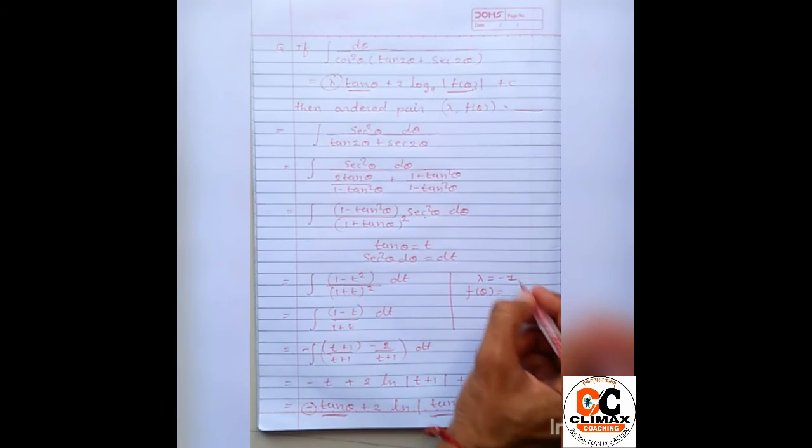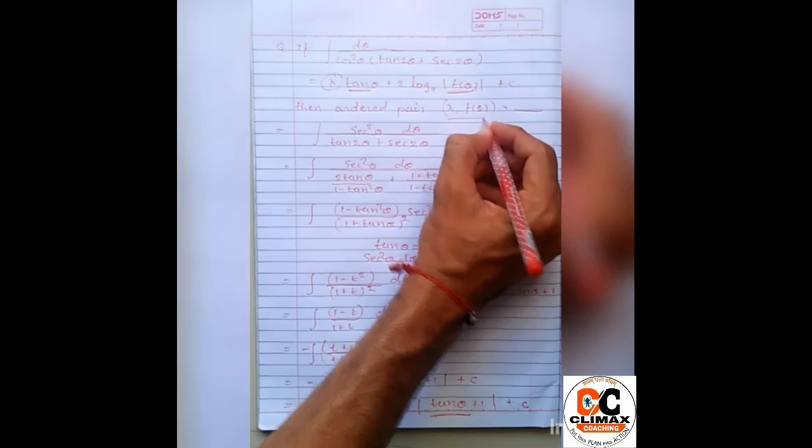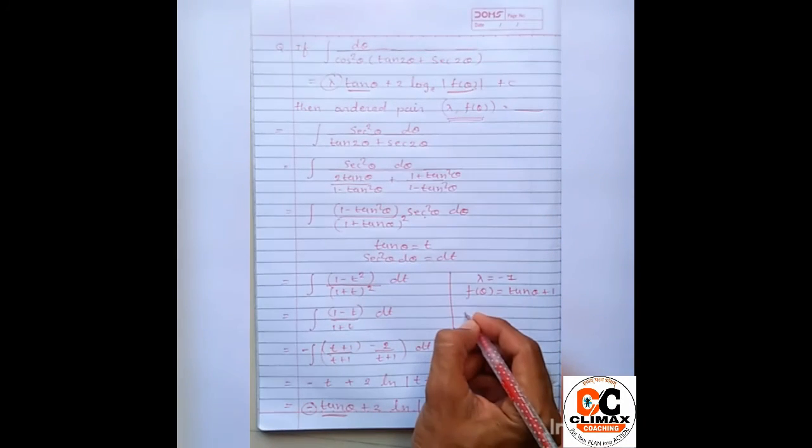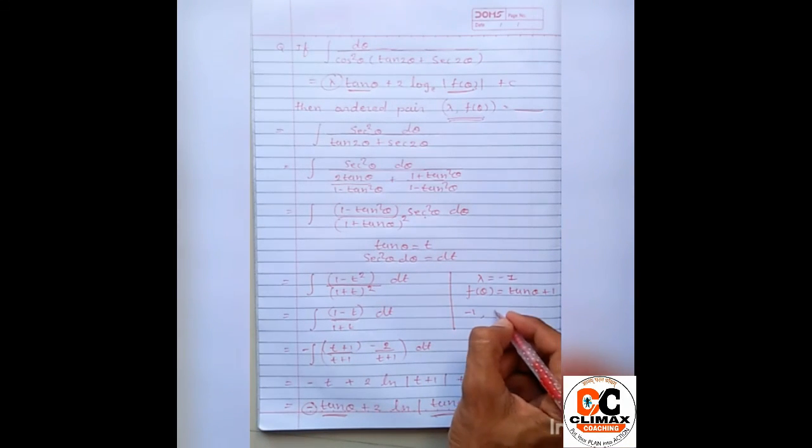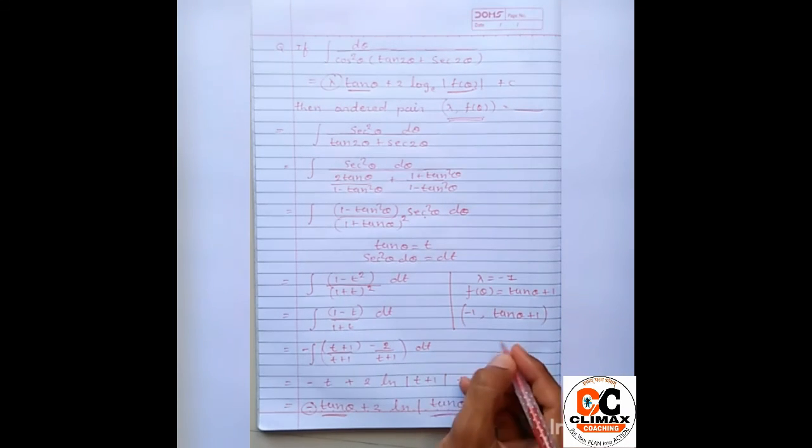Second, here f of theta is tan theta plus 1 so we can say that f of theta equal to tan theta plus 1.